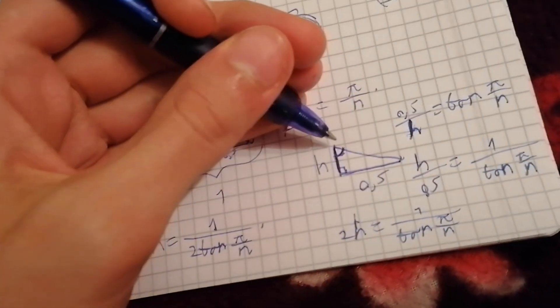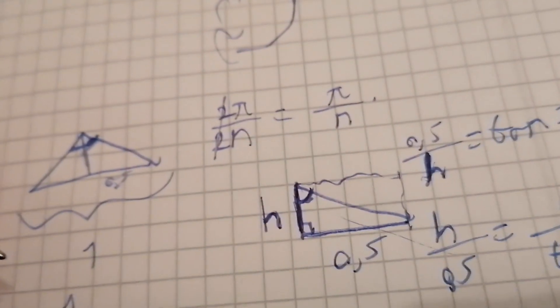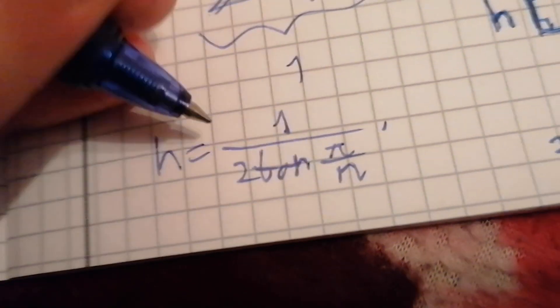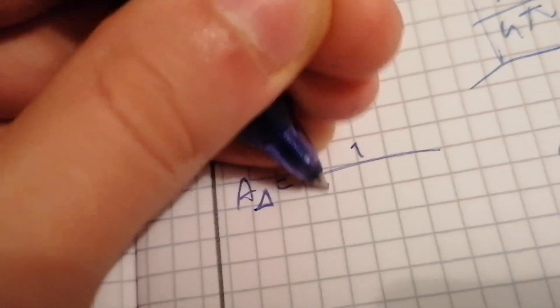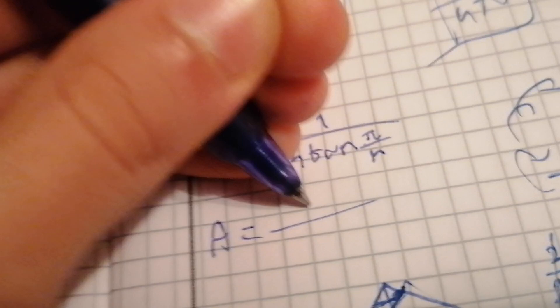Now, the area of this triangle is just h times 0.5 divided by 2 because it's just this rectangle divided in half. But we actually don't need to divide it by 2 because we want to find out this big triangle because then we can just multiply it with the number of sides. So, we would need to multiply by 2 again. It cancels out. So, it's just this product to get the whole area of one triangle. h times 0.5 is just h over 2. So, we just need to multiply by 2 the denominator. So, the area of one triangle is 1 over 4 times the tangent of pi over n. And this is the formula.